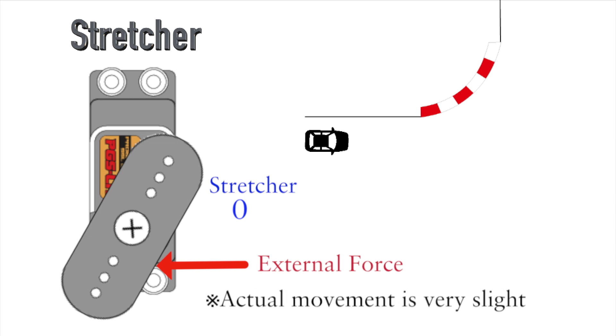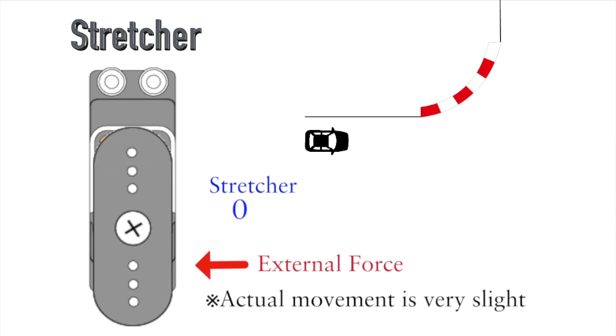If the stretcher is 0, the servo is easy to push by external force. But if you increase the stretcher number, holding power is much stronger, so the servo didn't move.